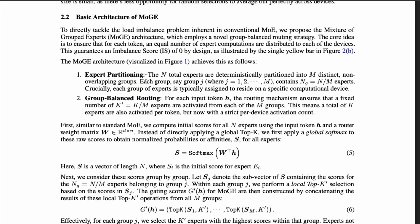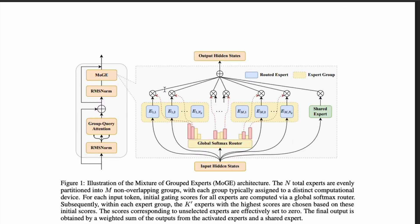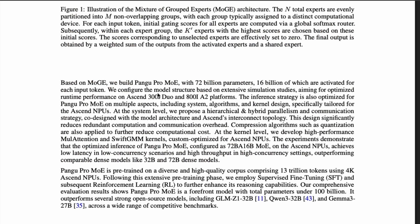To achieve this design architecture of MoGE, there are two important elements: the first is expert partitioning, and the second is group balanced routing. In any MoE system, routing is critical — it determines how a given token is routed to a given expert. In MoGE, you route to a group, so there is group balanced routing. I'd strongly encourage you to read the paper linked below for more details.